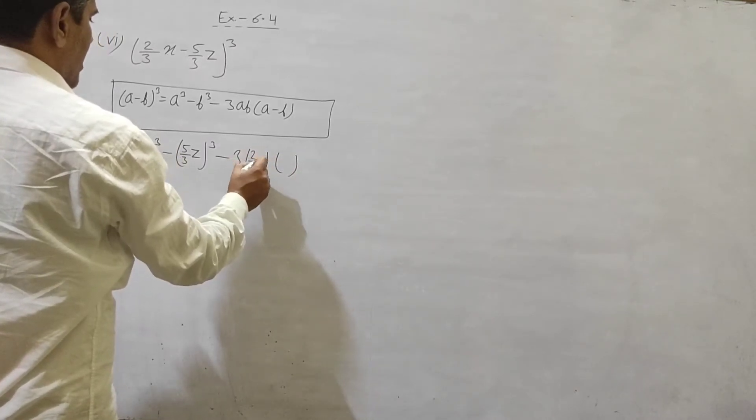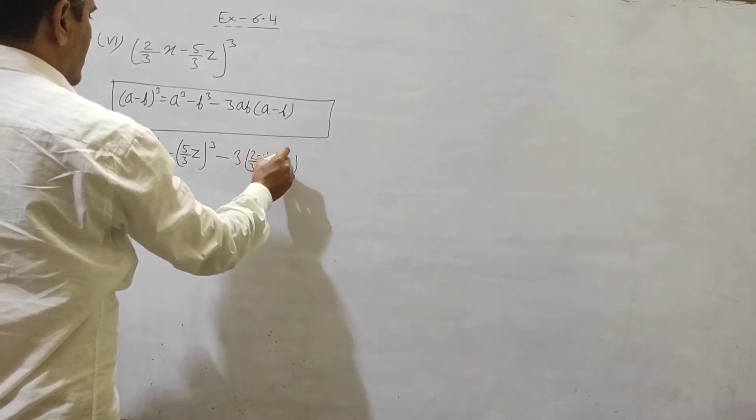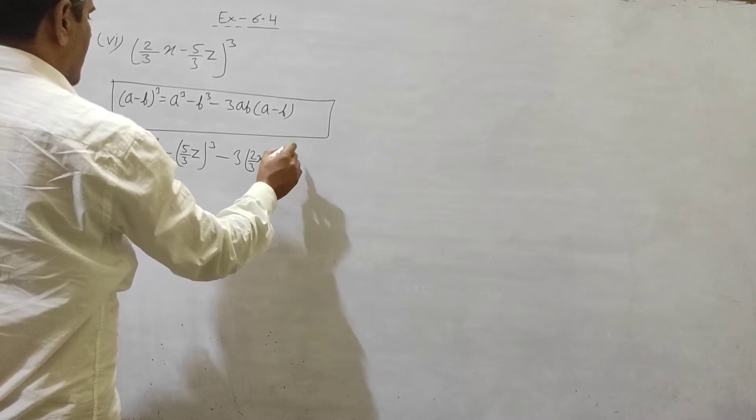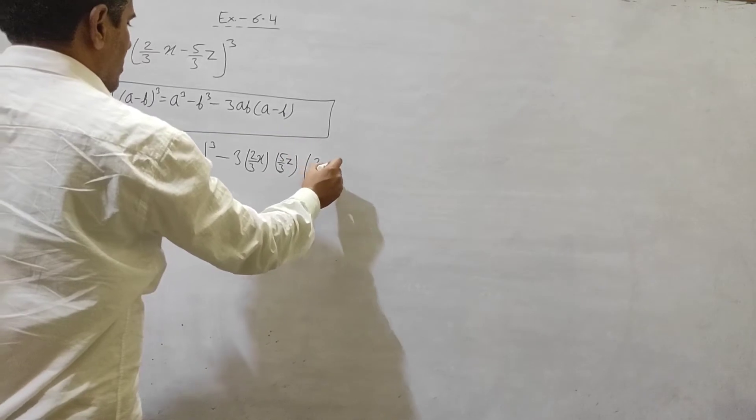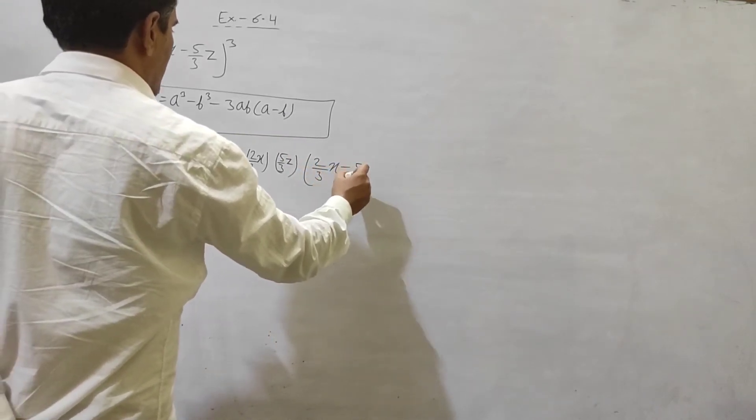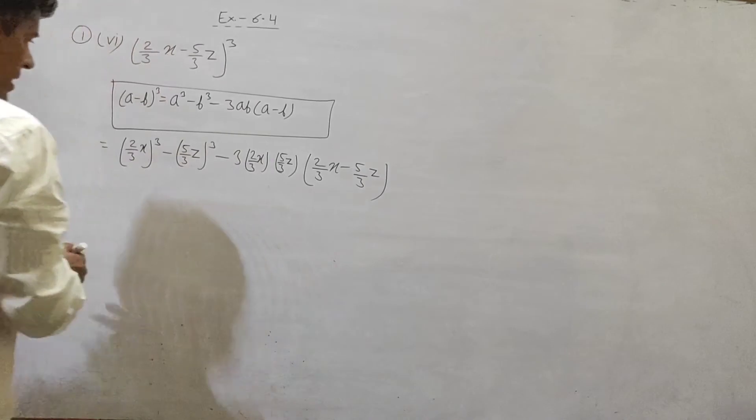3 multiply 2 by 3x, multiply 5 by 3z, multiply with a minus b: 2 by 3x minus 5 by 3z.